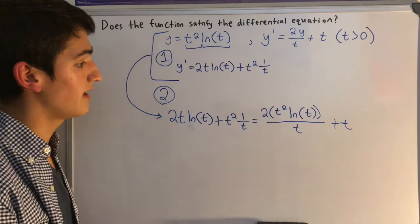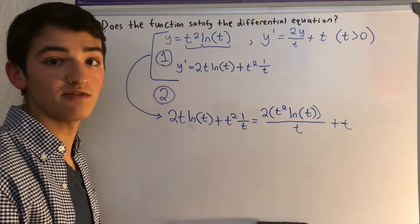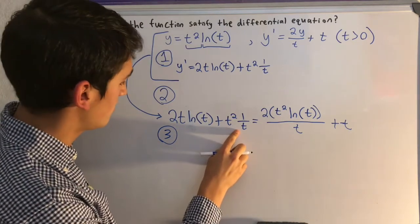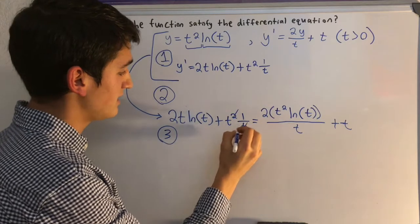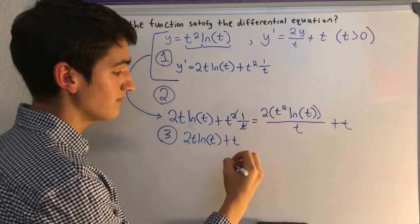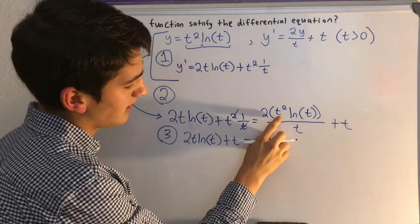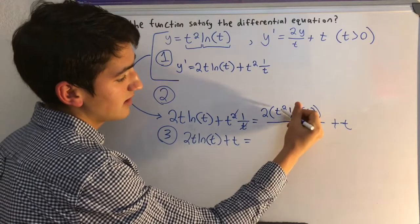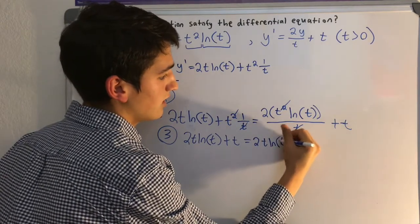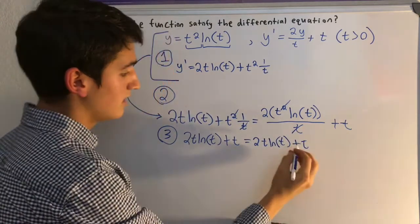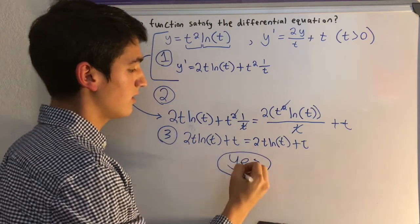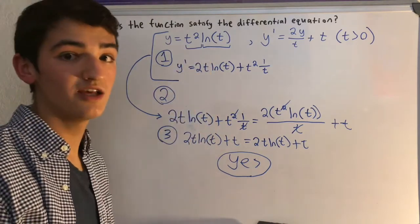So now that it's all plugged in, all we have to do is simplify the equation to see if both sides are equivalent. So that's our third step. So we can simplify here by dividing by t. So we can get 2t natural log of t plus t. And that should equal, now this is all multiplied together, so we can simply divide by this t and get rid of the t squared, so we're just left with a t, so it's 2t natural log of t plus t. And if you look, both sides are identical. So yes, this given y function satisfies the differential equation.